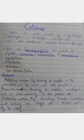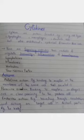Asalaamu alaikum. Today we are going to discuss cytokines, which are cell-derived mediators. These cytokines are proteins that are secreted by many cell types, for example lymphocytes, macrophages, dendritic cells, also from the endothelial, epithelial and connective tissue cells. These cytokines are the signaling molecules that mediate and regulate immunity, inflammation and hematopoiesis.